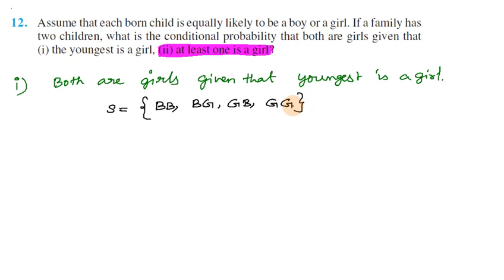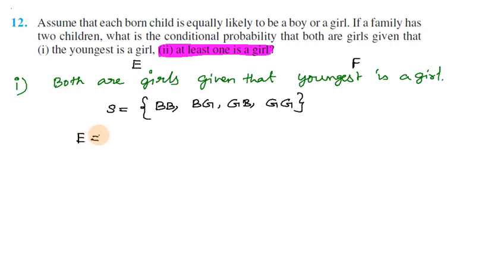So there are four outcomes. Both are girls — the event 'both are girls' is our event of interest. Given that the youngest is a girl, this is the condition F.